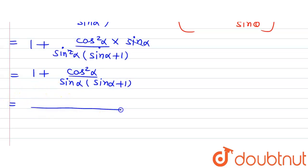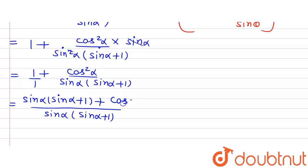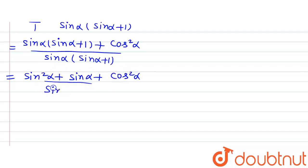Now taking the LCM and expanding, we get sin²α + sinα + cos²α in the numerator, divided by sinα(sinα + 1). On solving, sin²α + cos²α equals 1, so the numerator becomes 1 + sinα, divided by sinα(sinα + 1).